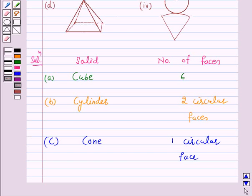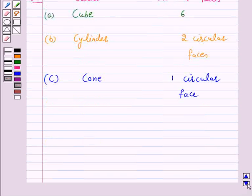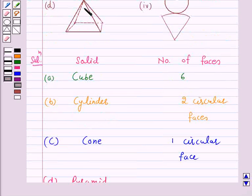And in part D the given solid is a pyramid. And pyramid has four triangular faces and one square face.